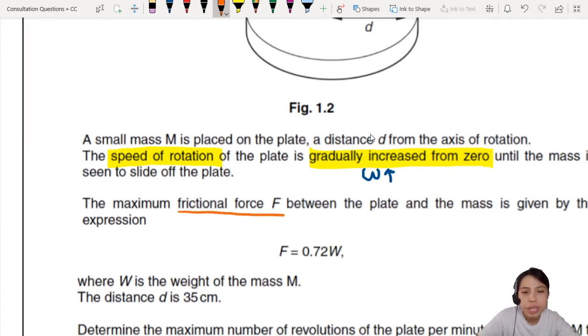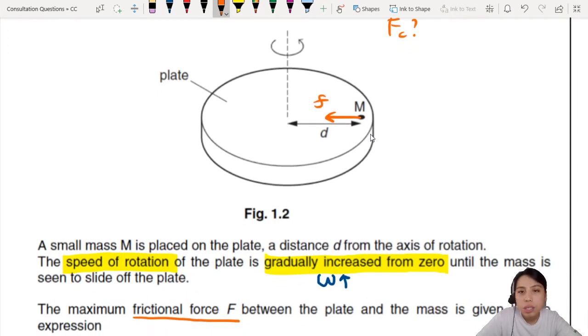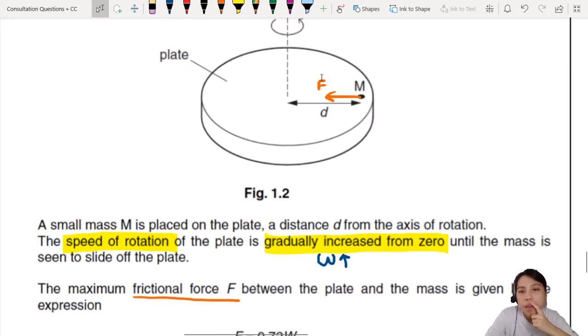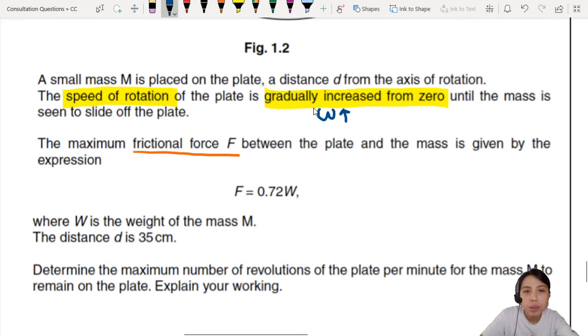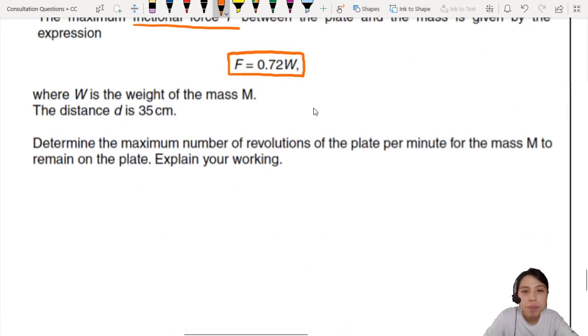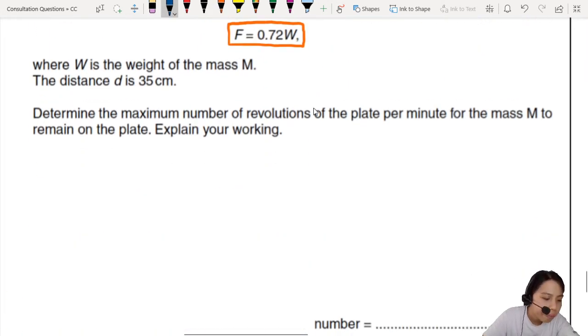There is a centripetal force. But what contributes to the centripetal force? The only force here that points to the center is our good old friction. Frictional force is your big F. If there were no frictional force, if it's perfectly smooth, the mass cannot even rotate in a circle.